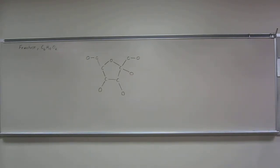Okay, so this one says fructose C6H12O6 is the sweetest naturally occurring sugar and is found in many fruits and berries.